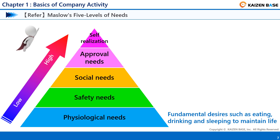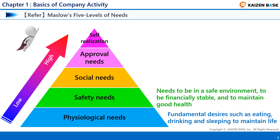First, the lowest need is the physiological one. It refers to underlying needs such as eating, drinking, and sleeping to maintain life. When applied to a workplace, it is the need to secure a working salary and a working environment that does not threaten survival. When this physiological need is fulfilled, it shifts to the need for safety — the desire to be in a safe environment, to be financially stable, and to maintain good health.